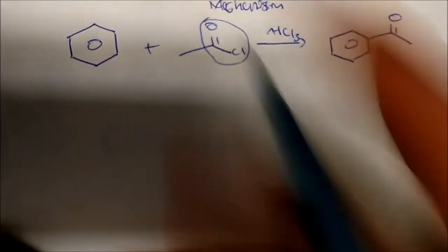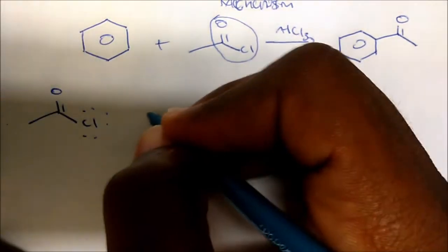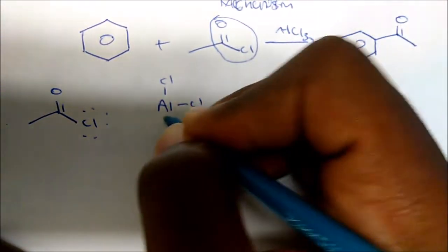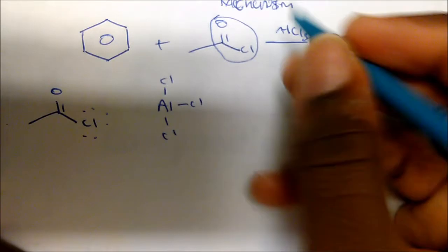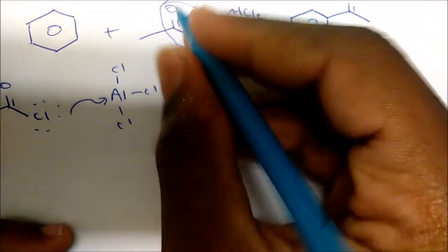Let's talk about the mechanism. In the first step, my chlorine has these lone pairs around it and it's gonna attack aluminum. Aluminum has three chlorines around it, so it's gonna use two of these lone pairs to attack aluminum and form a bond.